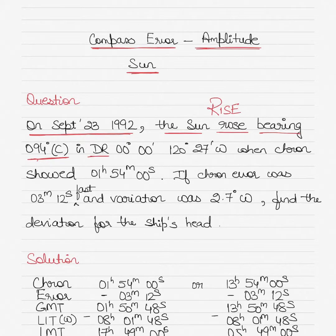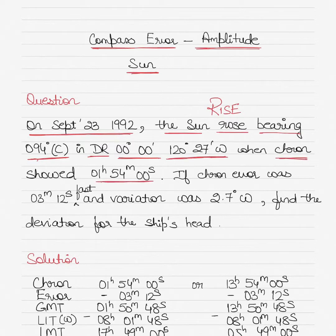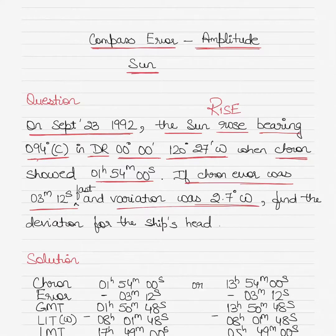The dead reckoning position was 0 degrees latitude (the equator) and 120 degrees 27 minutes west longitude. The chronometer showed 01 hours 54 minutes 00 seconds, with a chronometer error of 3 minutes 12 seconds fast, and variation was 2.7 degrees west. We need to find the deviation using the amplitude method, not the azimuth method.